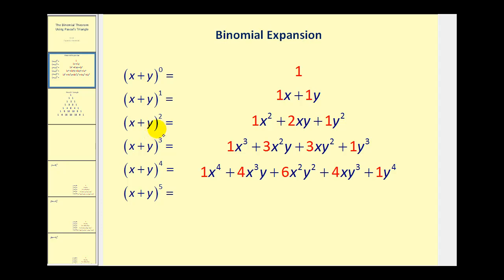When we expand the quantity x plus y squared, notice that the first term has two factors of x, which matches this power. Then the next term, the power on x decreases to one, but we start picking up factors of y. And if we sum these two exponents, it's always going to equal the original exponent on the binomial. In the third term, we have zero factors of x but two factors of y. Again, each of the exponents always add to two, which is the same as the exponent on the binomial.